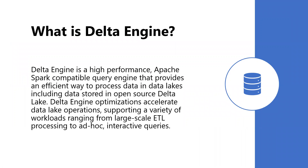What is Delta Engine? Delta Engine is a high-performance Apache Spark compatible query engine that provides an efficient way to process data in a data lake, including data stored in open-source Delta Lake. Delta Engine optimizations make Delta Lake operations highly performant, supporting a variety of workloads ranging from large-scale ETL processing to ad hoc interactive queries.